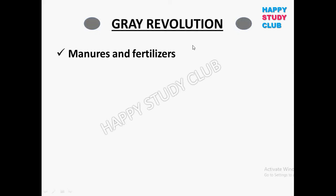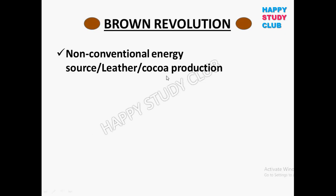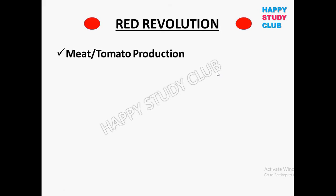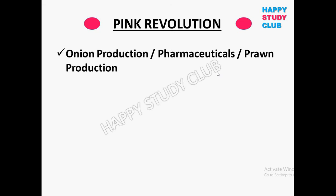The Gray Revolution is for manures and fertilizers. The Brown Revolution was started for non-conventional energy sources, leather, and cocoa production. The Black Revolution is for petroleum production or biofuel production.